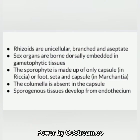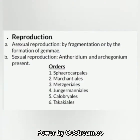Sex organs are borne dorsally, embedded in gametophytic tissues. The sporophyte is made up of only a capsule in Riccia, or foot, seta, and capsule in Marchantia. The columella is absent in the capsule. Sporogenous tissues develop from the endothecium.